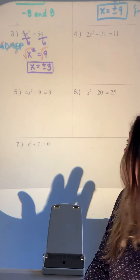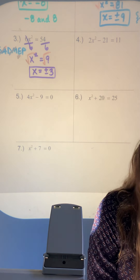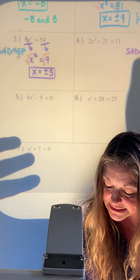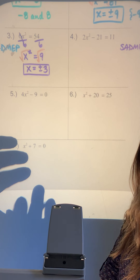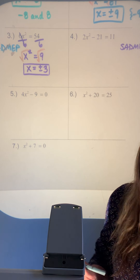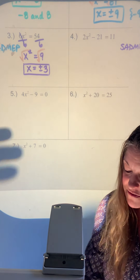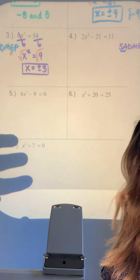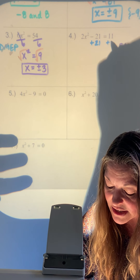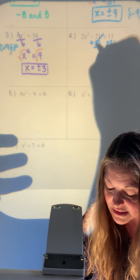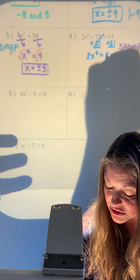Number 4 has basically a little bit of everything. Write SADMEP on the side to take us through all steps to get x by itself. First, take care of any addition or subtraction. There's subtraction here, so add it over to the other side, leaving 2x squared equals 32.